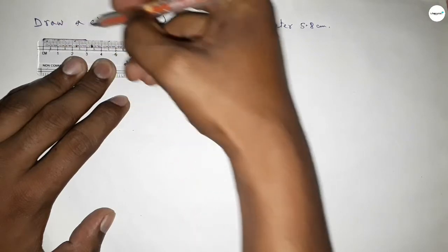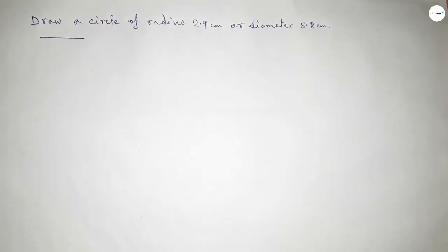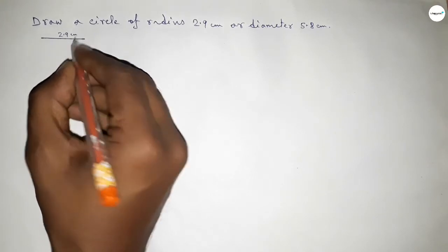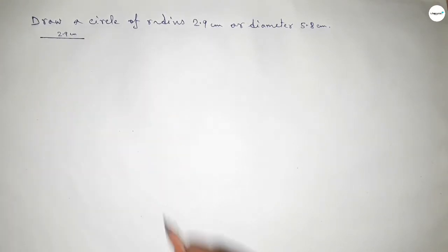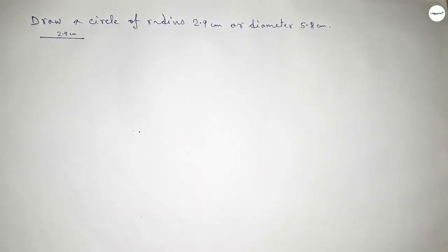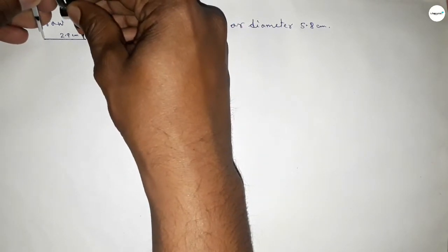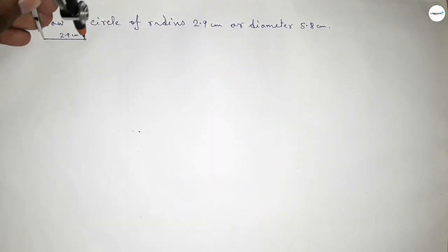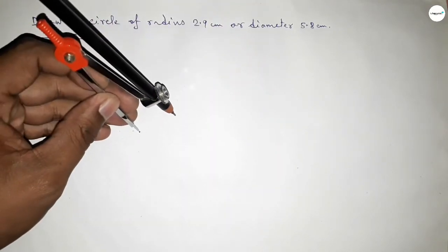We know that radius of a circle is half of diameter, so this is 2.9 centimeter. Now taking here a point, next taking the length 2.9 centimeter by using compass by this way and putting the compass on the point.